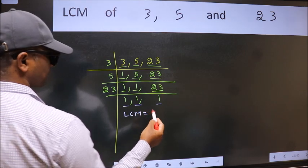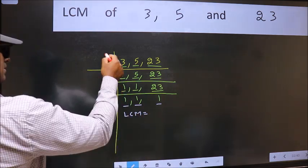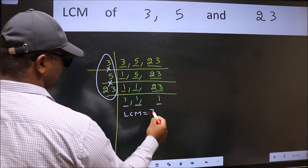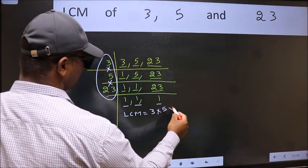So our LCM is the product of these numbers. That is 3 into 5 into 23.